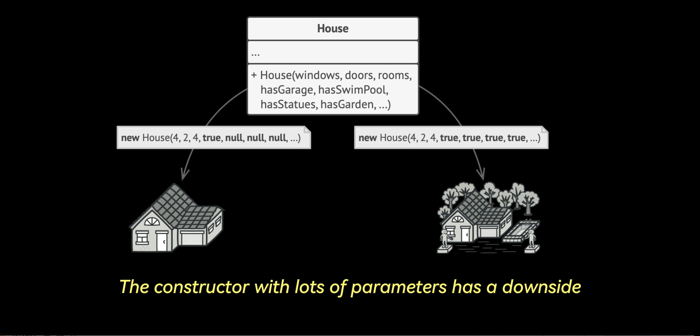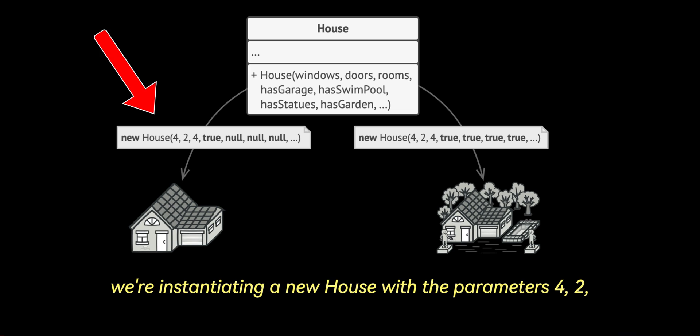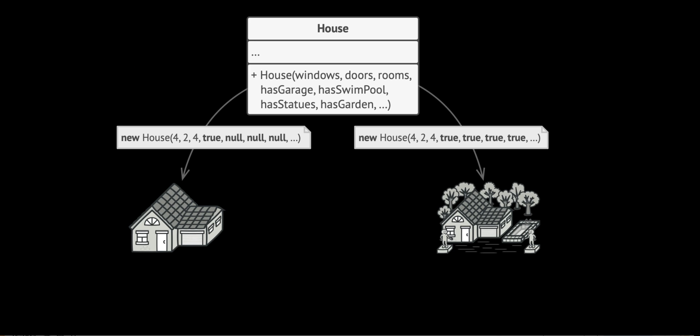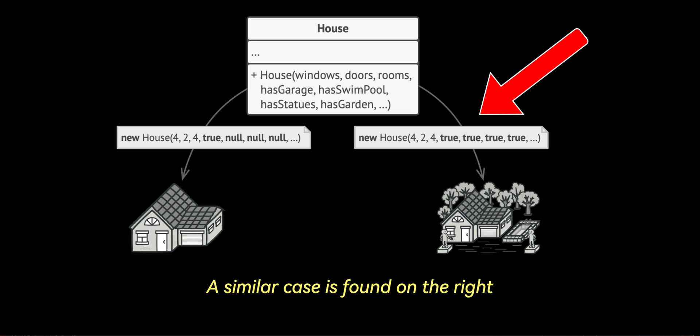The constructor with lots of parameters has a downside — not all of the parameters are needed at all times. On the left, we're instantiating a new house with the parameters 4, 2, 4, true, followed by null, null, null, which could extend indefinitely. A similar case is found on the right, in which we instantiate the house with a large number of true parameters.